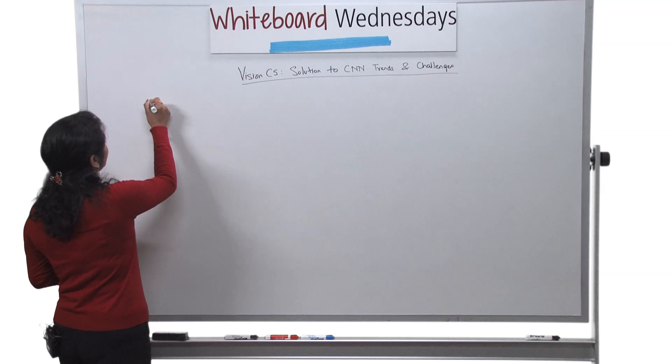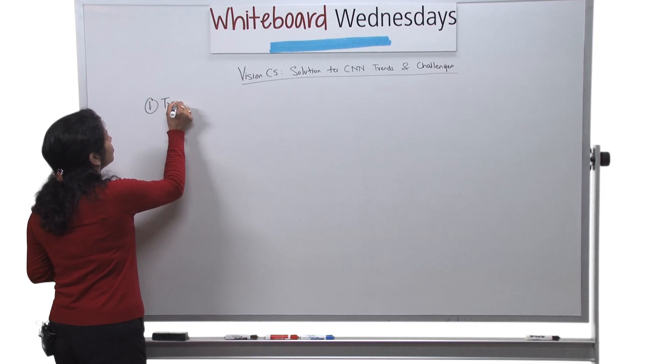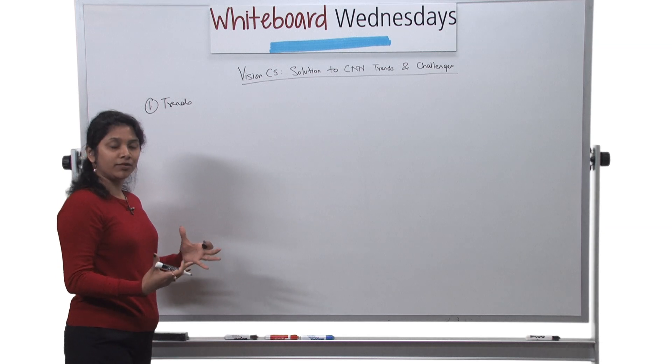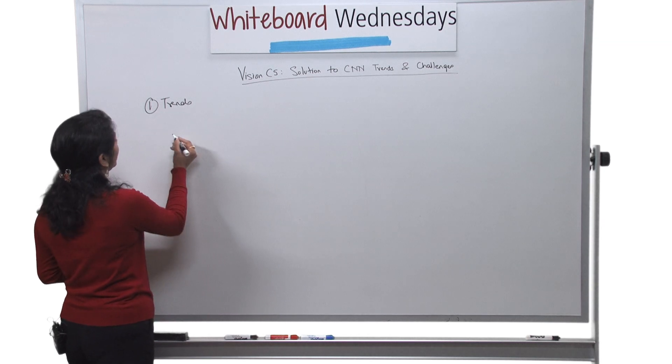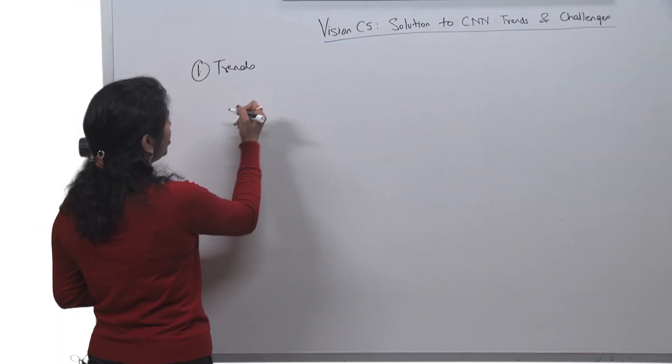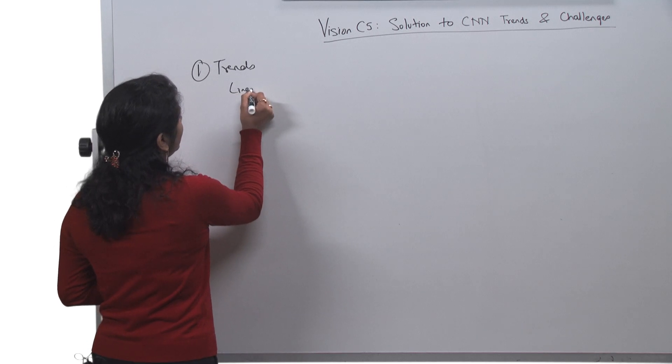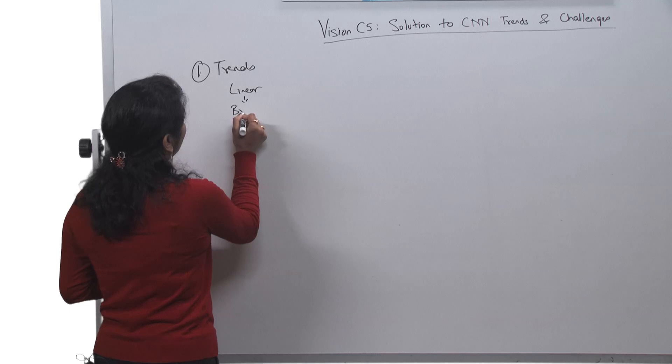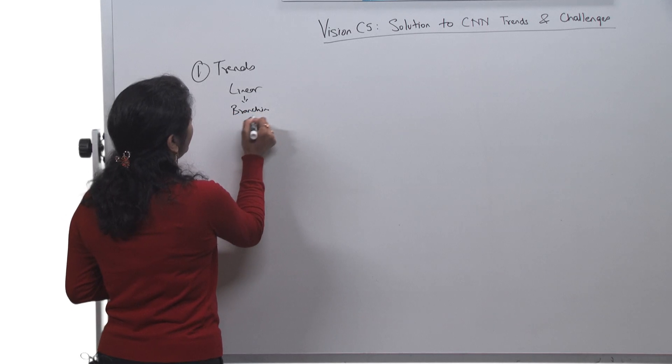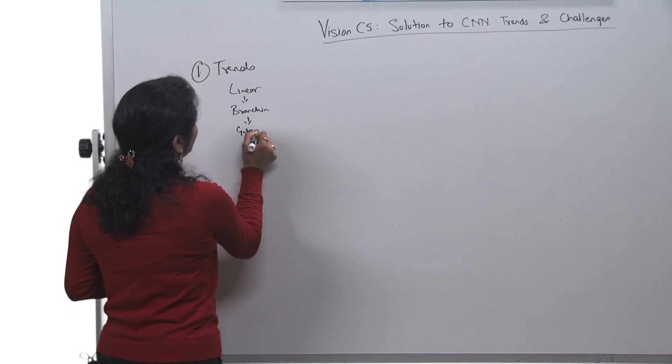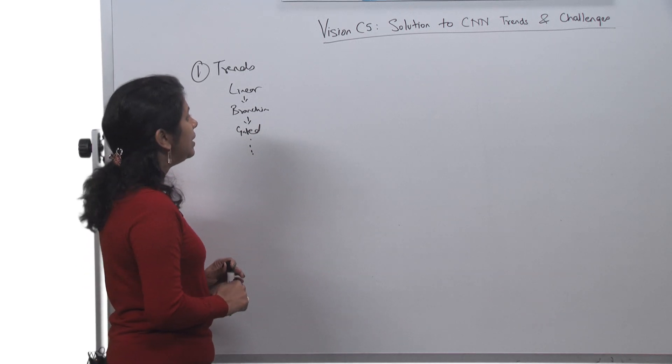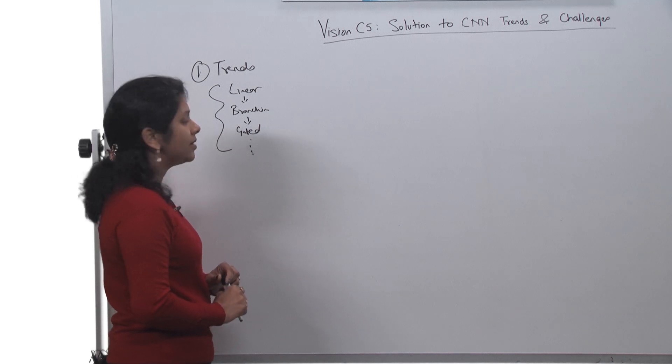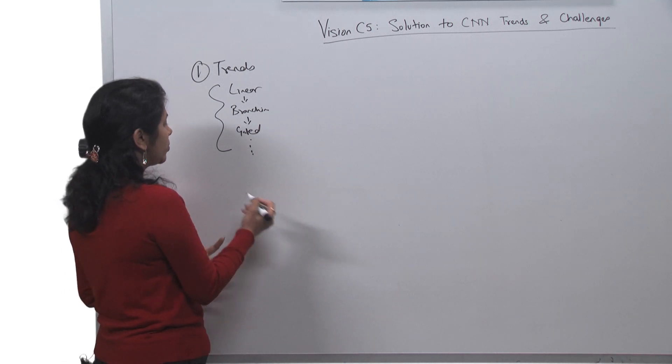So I will start with the trends. We have been seeing that as data has been evolving, as the networks have been evolving, we are seeing a lot of changes in the network. They started with linear, we moved to branching, we have now something called gated. So these are evolving, these are changing, so we need a system which can work with these, and that's where C5 comes into picture.